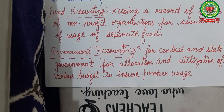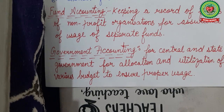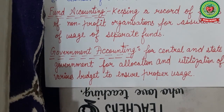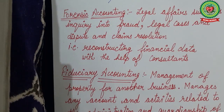Fund accounting is done for NGOs — like Pingalwara and Rotary Club in Amritsar — and non-profit organizations made for public welfare, such as blind homes and orphanages. They keep a record of their funds, donations, and charities, and that accounting is known as fund accounting. Government accounting: every year on 1st February the government displays its annual budget. For preparing that budget, both central and state governments do accounting — allocating different resources and planning their utilization in the form of a budget — which is known as government accounting.